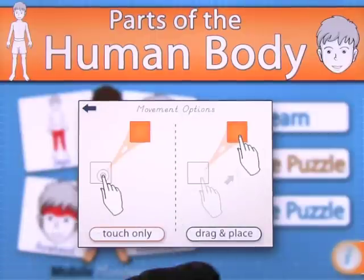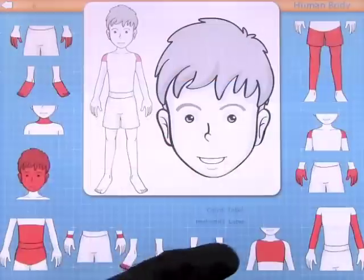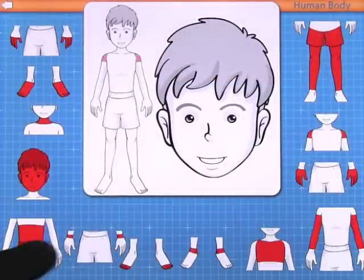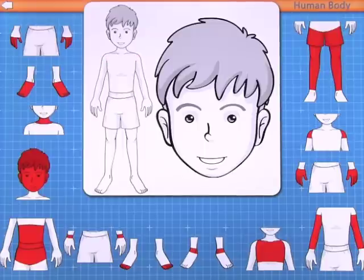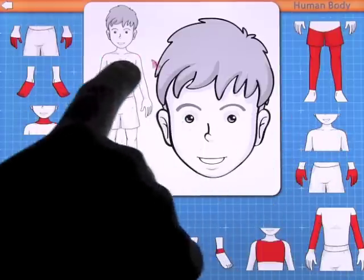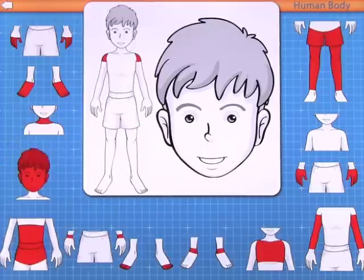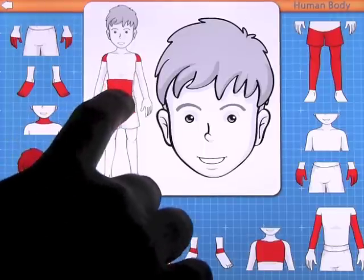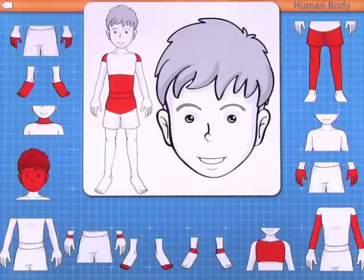In the shape puzzle, you have two options: touch only or drag in place. We're going to show drag in place. The idea is to drag the appropriate part of the body to the flashing part on the screen. As you can see, the shoulders are flashing and you simply drag it over to fill it in.